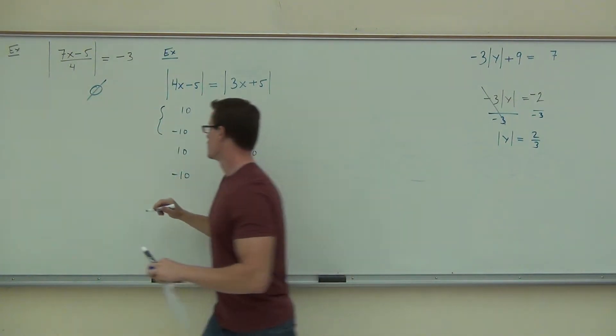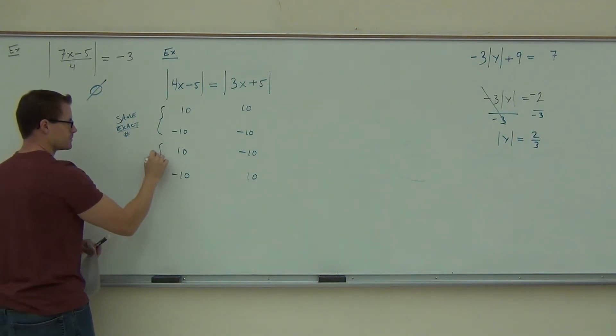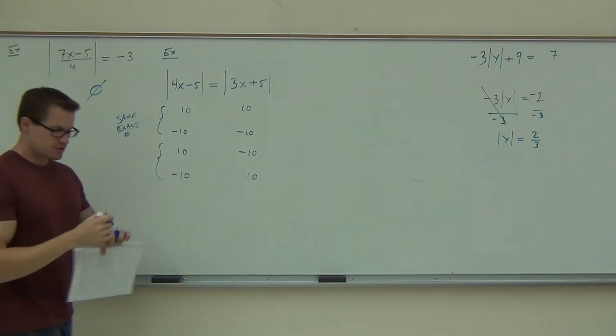This idea, these first two are, if you have the same exact number inside your absolute value, whether they're both positive or whether they're both negative, if you have the same exact number, your absolute values will be equal to each other. Are you with me on that? Because positive 10 equals positive 10 in absolute value, and negative 10 equals negative 10 in absolute value. They're all positive 10. So far, so good? So this is case one. You have the same exact number.